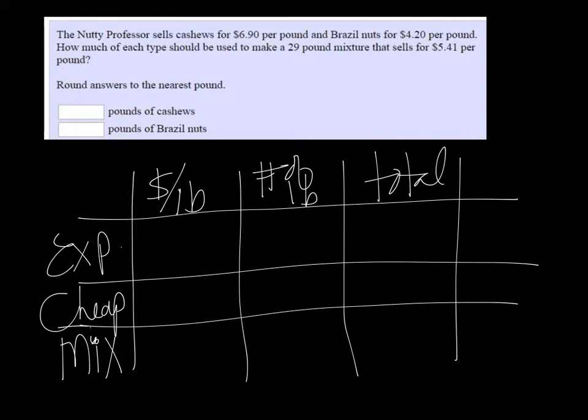So the expensive ones are $6.90 a pound, cheap ones are $4.20 a pound, and the mixture is going to sell for $5.41 per pound.